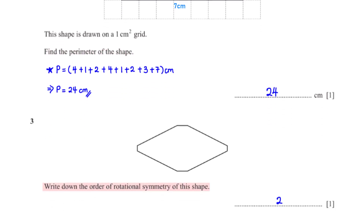Write down the order of rotational symmetry of this shape. The order of rotational symmetry is simply the number of times the shape looks exactly like the original in one complete rotation. When we rotate the shape 180 degrees, it looks exactly like the original, and when we rotate it 360 degrees, we come back to its original shape. And so the order of rotational symmetry is 2.